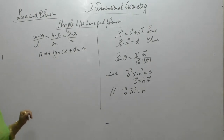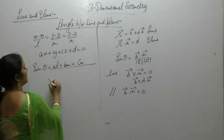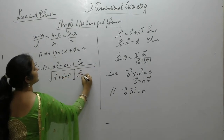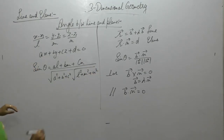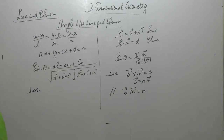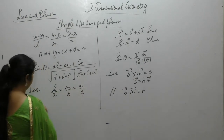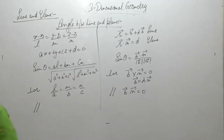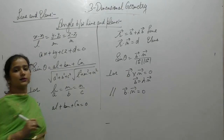The angle between them is sin θ = (al + bm + cn) / (√(l² + m² + n²) · √(a² + b² + c²)). Conditions remain the same: when the line is perpendicular to the plane, it is parallel to the normal, giving l/a = m/b = n/c. When the line is parallel to the plane, al + bm + cn = 0.